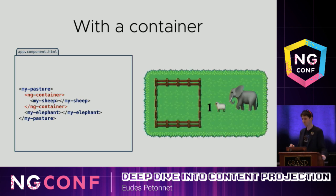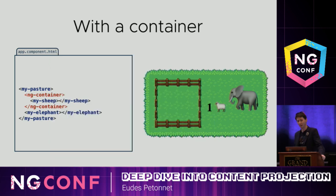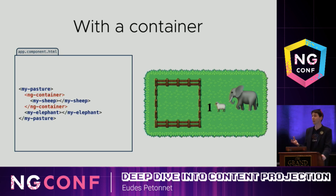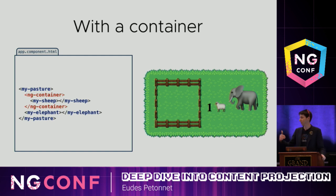So obviously wrapping content in ng-container should still work the same way — or not really. What happened is ng-content happens at build time; it's very basic, almost dumb at that point. At build time, ng-container is still here — it didn't disappear, it didn't produce any output. So ng-content just looks at the surface of everything, and it sees an ng-container and an elephant, so everything goes outside, no questions asked.